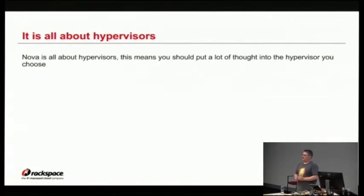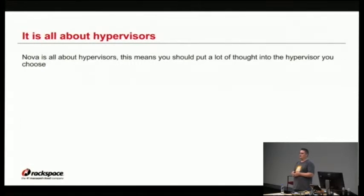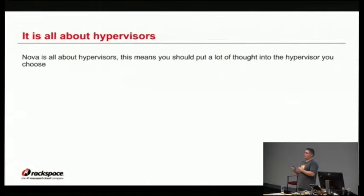Fundamentally, Nova is about hypervisors — providing an API on top of a set of hypervisor nodes and handing out virtual machines. When picking a hypervisor driver, you need to pick one that is reliable and meets your needs. If you have a lot of operational expertise with a particular hypervisor, that might be cool, but you also need to check that the Nova driver for it behaves reasonably. We have examples of drivers that are less well tested than others, and driver authors who are less well integrated into the Nova team.